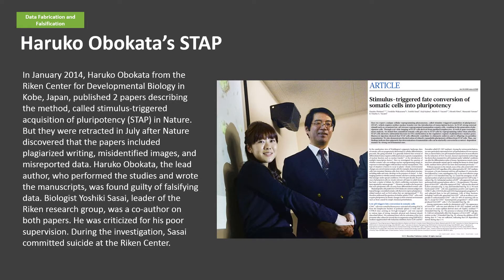In January 2014, Haruko Obokata from the Riken Center for Developmental Biology in Kobe, Japan, published two papers describing the method called Stimulus-Triggered Acquisition of Pluripotency in Nature. The papers were retracted in July after Nature discovered that they included plagiarized writing, misidentified images, and misreported data. Haruko Obokata, the lead author who performed the studies and wrote the manuscripts, was found guilty of falsifying data.